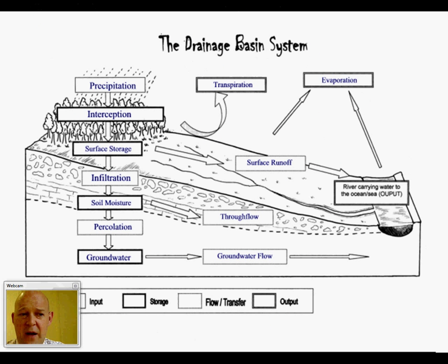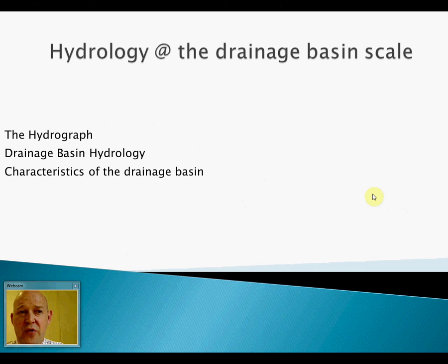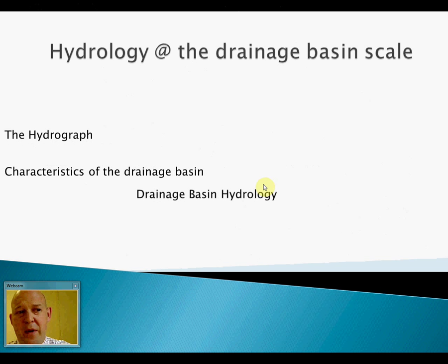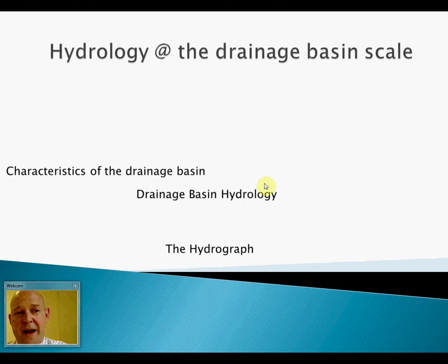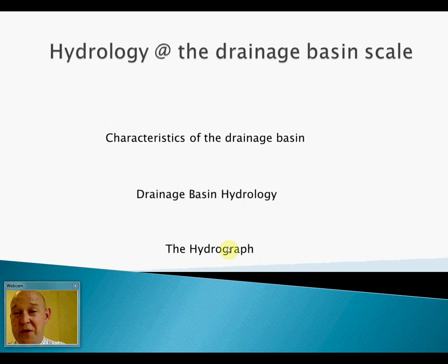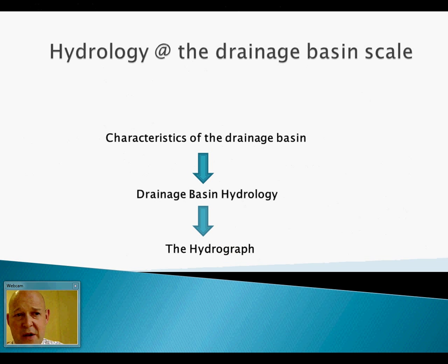On the right-hand side of this diagram, we have the output of the system: the discharge in the main river channel, measured using a weir. We'll look at what happens with that by reference to the hydrograph, which is a topic in itself, but I've put them all together here.